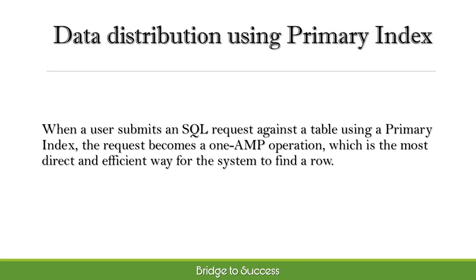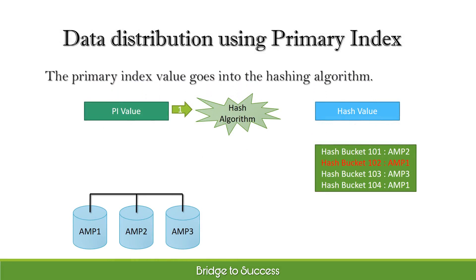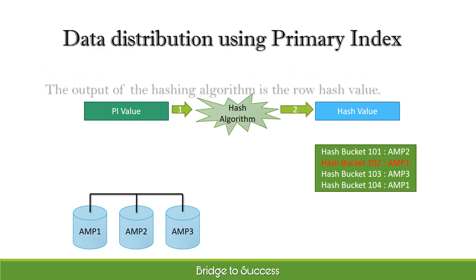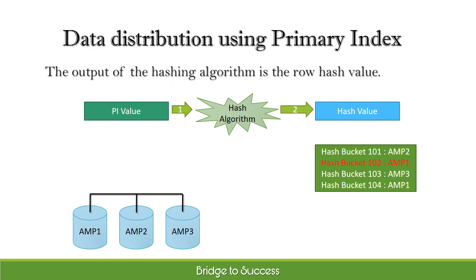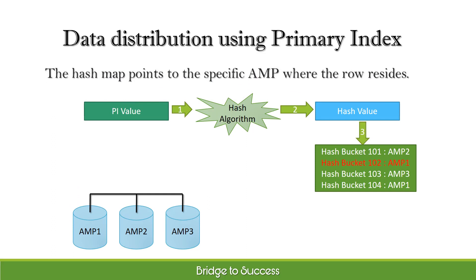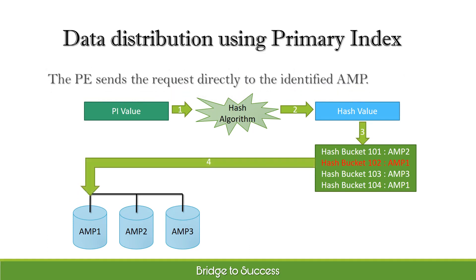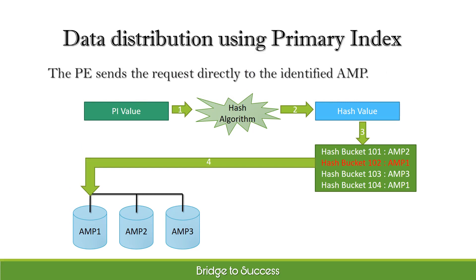When a user submits an SQL request against a table using a primary index, the request becomes a 1AMP operation, which is the most direct and efficient way for the system to find a row. Let's see the process: the primary index value goes into the hashing algorithm. The output of the hashing algorithm is the row hash value. The hash map points to the specific AMP where the row resides. The PE sends the request directly to the identified AMP.